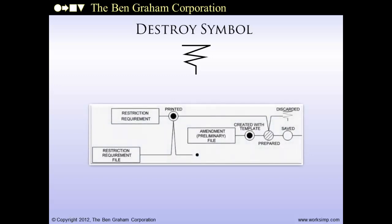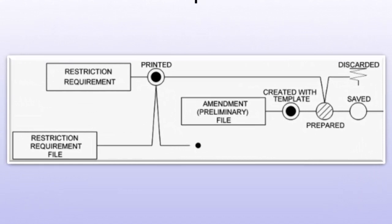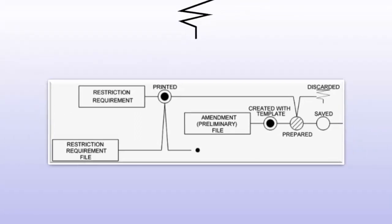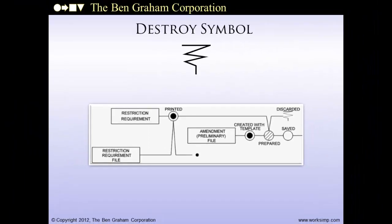The destroy symbol is shaped something like an electrical ground. It represents an activity that causes the item to cease to exist — purging and cleansing activities built into a system. When used, it will always be the last step at the end of a flow line. In the snippet, the restriction requirements document is discarded after it is used, ending that flow line. Destruction of items is typically given less attention than it deserves, and as a result bureaucracies wind up with massive accumulations of non-essential and duplicate records.